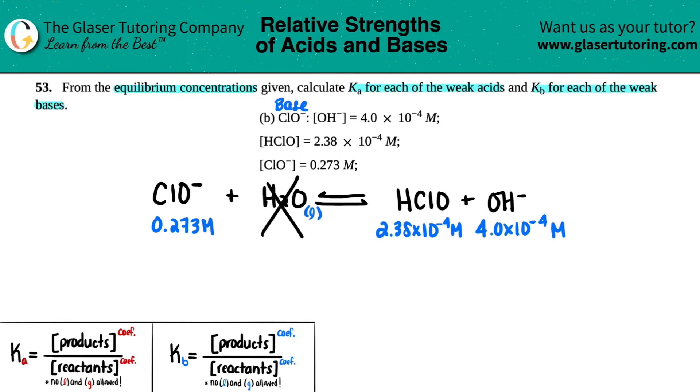Let's write out the Kb formula. So Kb would equal, let's see, products divided by reactants, right? The same as the Kc formula that we learned last chapter. So it would be HClO times OH- and that would be over ClO-.